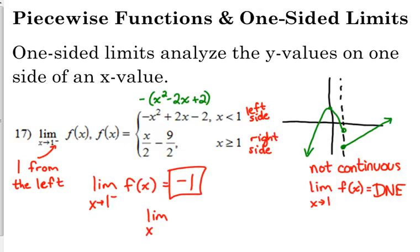The limit as we approach 1 from the right — which they didn't ask us, but I want to talk about it — is negative 4. That's what you get when you plug 1 into the right side. 1 times one half minus something gives negative 4.